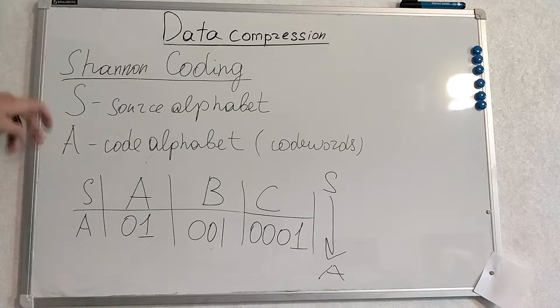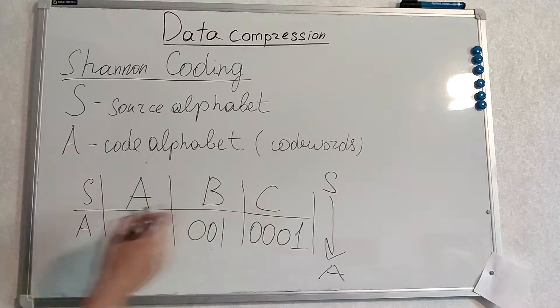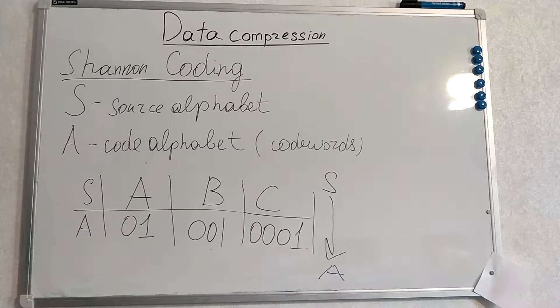Let's quickly recap. S will be our source alphabet, A is our code alphabet containing code words. It looks like this. S is a symbol, A is its binary representation or any encoded representation. Why Shannon Coding is an encoding scheme?